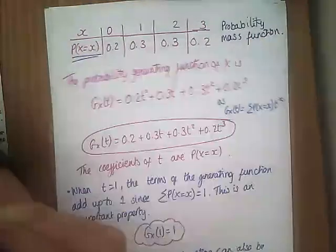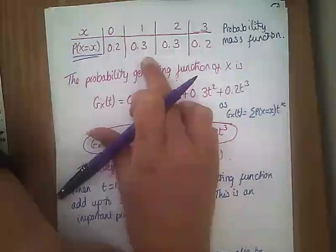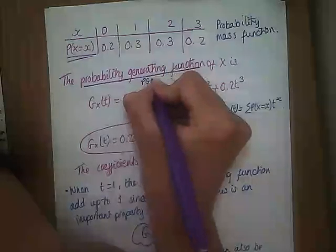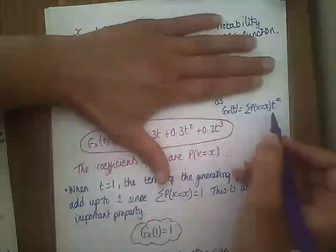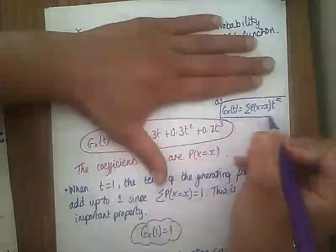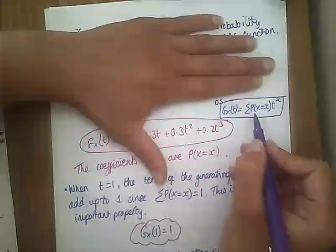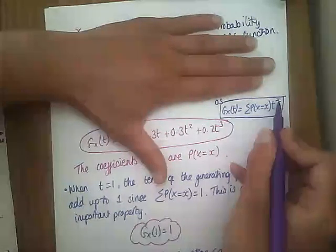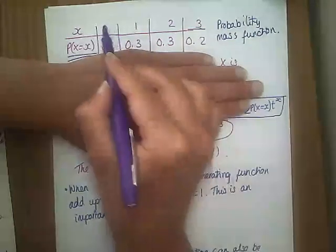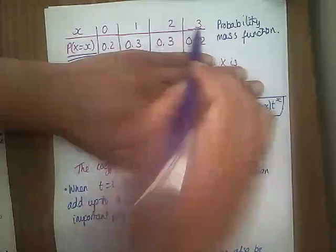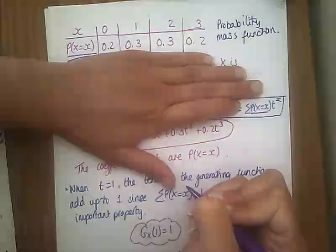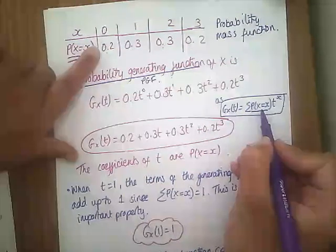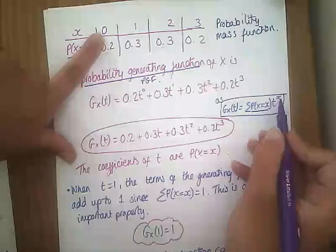So if I keep talking about probability mass function, I mean that table. If this is our probability mass function, then the probability generating function — i.e. the PGF — is given by the sum of each of the probabilities times t to the power of x. So I've got: 0.2 times t to the power of 0, plus 0.3 times t to the power of 1, plus 0.3 times t squared, plus 0.2 times t cubed.